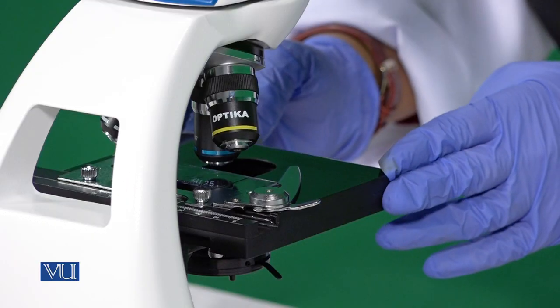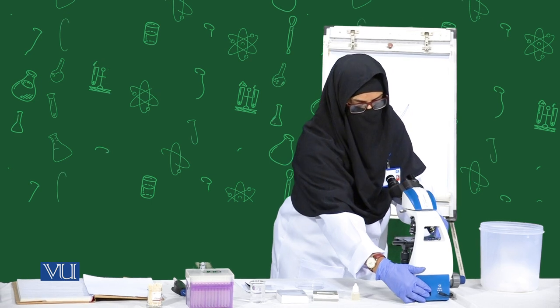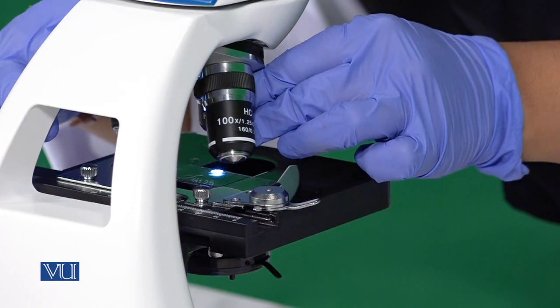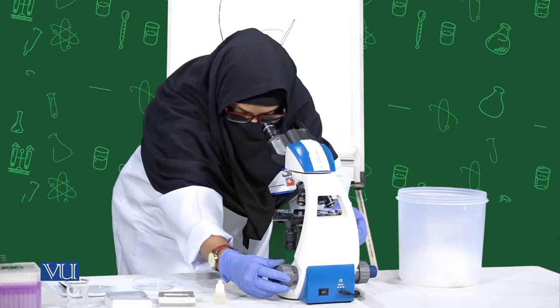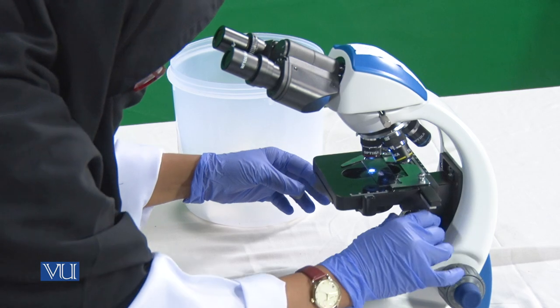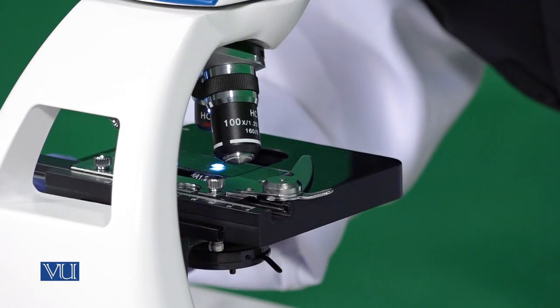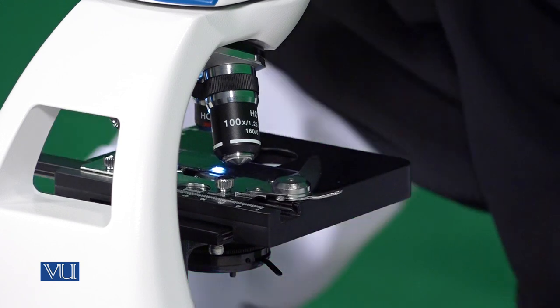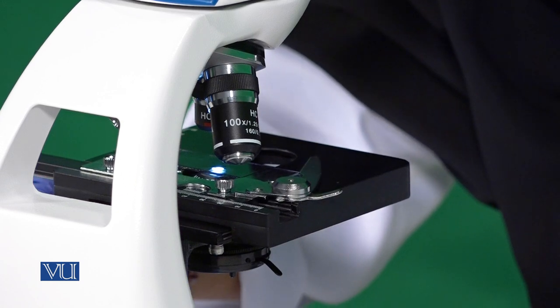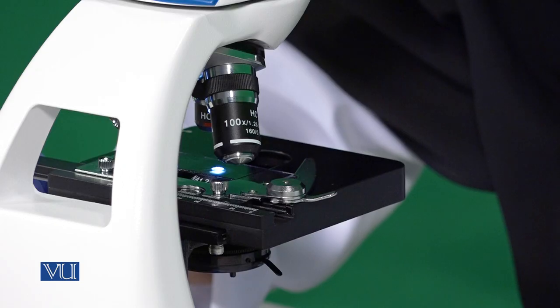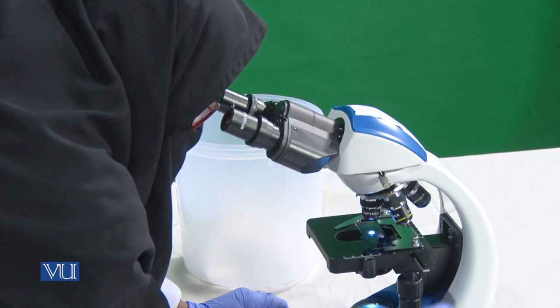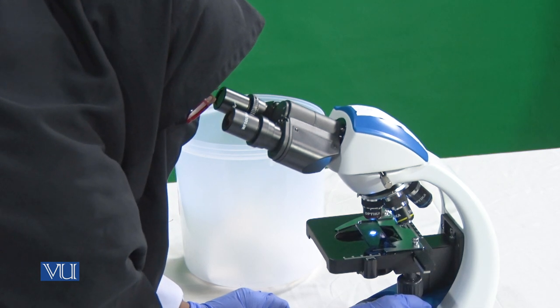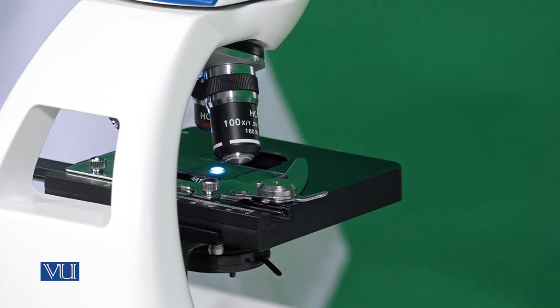So we will start visualizing the cheek cells. First, the magnification power will be 4x and we will move in a zigzag motion so that over the slide we will see the specimen. We are observing under 4x and we will write our observations.